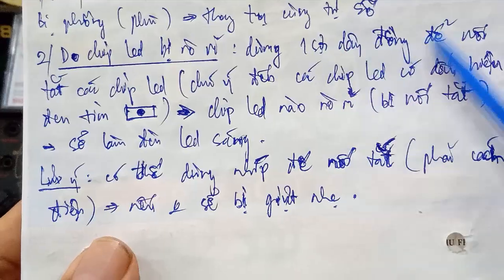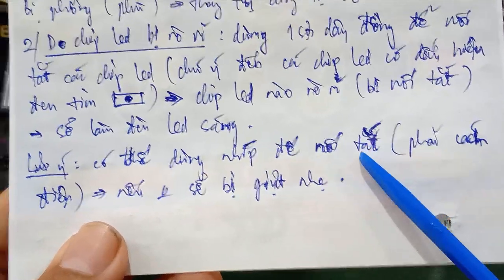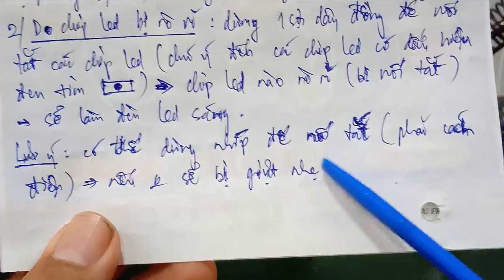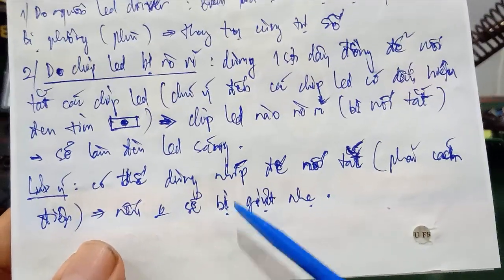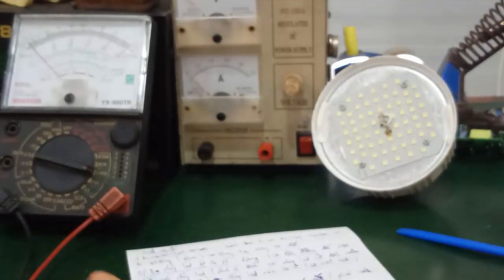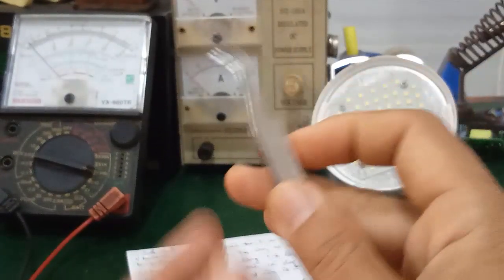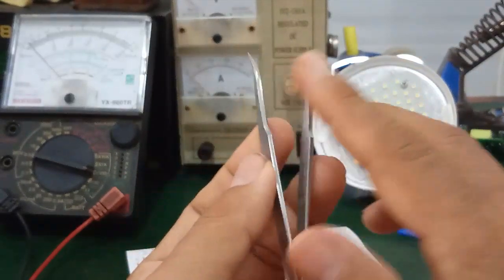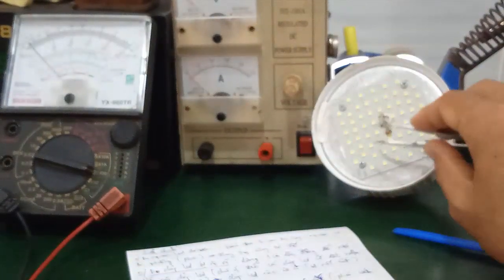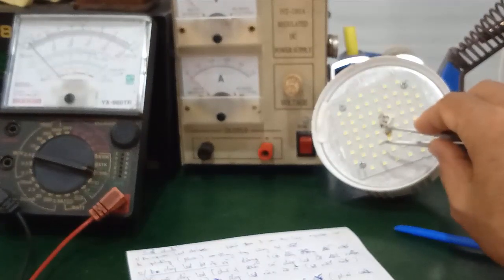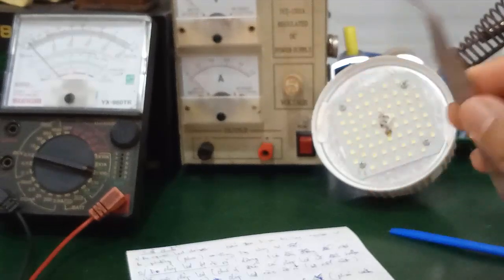Có thể dùng một sợi dây đồng hoặc một cái nhíp để nối tắt. Tuy nhiên lưu ý phải cắt điện trước, nếu không sẽ bị giật nhẹ. Một số bạn hay dùng nhíp — cần cuốn keo cách điện bên ngoài, nếu không khi chạm vào những con LED cần test có thể bị giật nhẹ. Đây là lưu ý về an toàn điện.